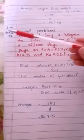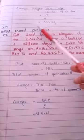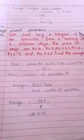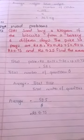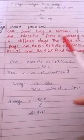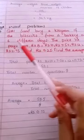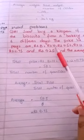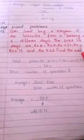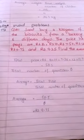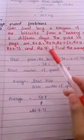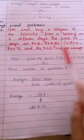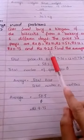Word problems, Book page number 172, Question number 1: Saad buys a kilogram of biscuits from a bakery on six different days. The prices he paid are: Rs. 8, Rs. 10, Rs. 7.50, Rs. 12, Rs. 11.75, and Rs. 9.25 — one for each of the six days.